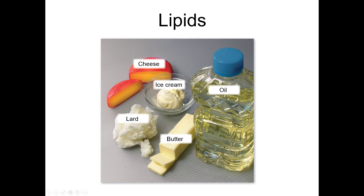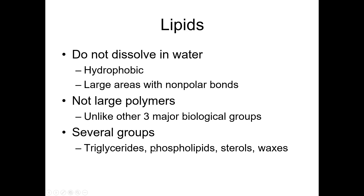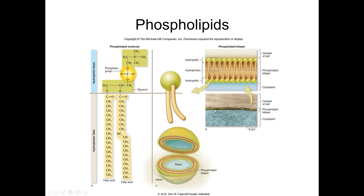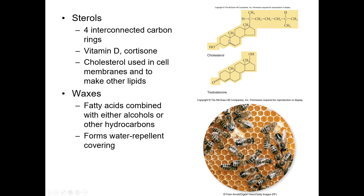For lipids, know the difference between triglycerides, phospholipids, and sterols. Triglycerides come in two forms — saturated and unsaturated — and you should be able to describe the difference. Phospholipids have a unique polar head that allows them to form membrane structures in water, critical for life. Sterols are four fused hydrocarbon ring structures that belong to the lipid group because they're nonpolar, and have a wide variety of functions. Waxes will not be on the quiz.